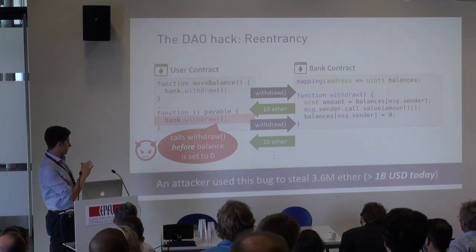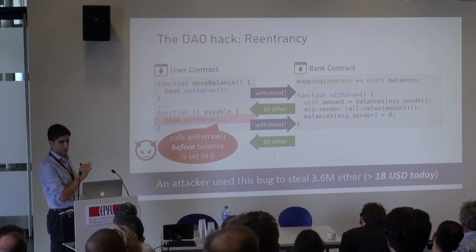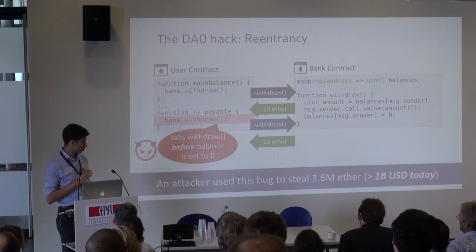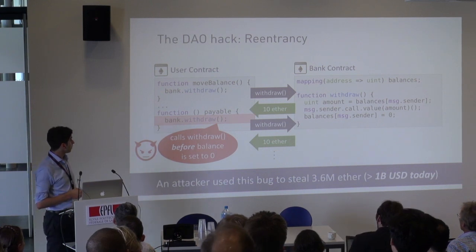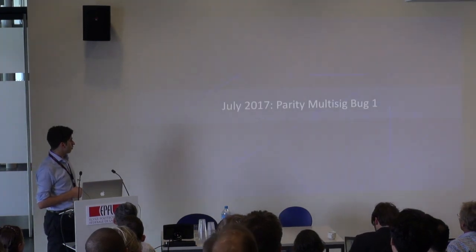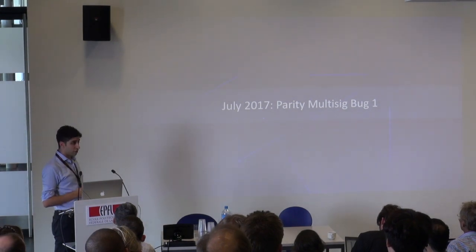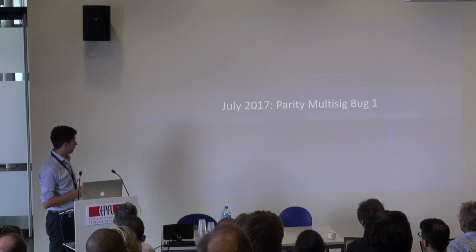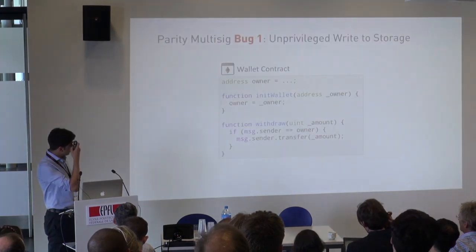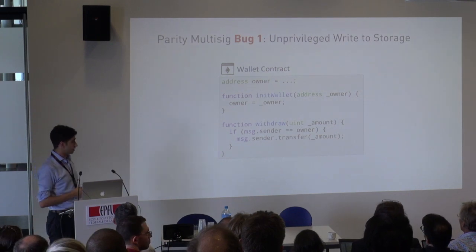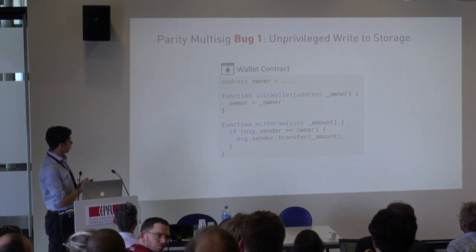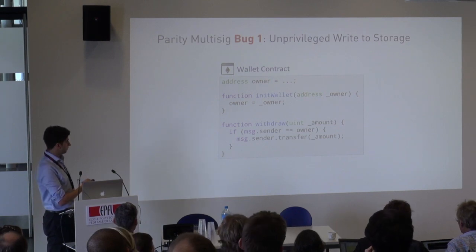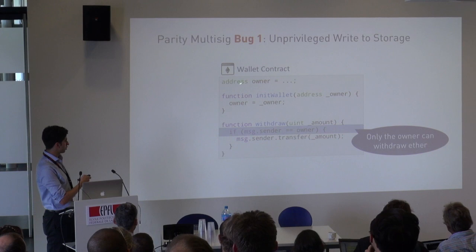That's exactly the kind of bug that happened — the first famous reentrancy bug that allowed an attacker to steal 3.6 million ether, which in today's valuation is a lot of money. Moving forward, the next most significant bug happened in July last year. This snippet shows the core of the problem that was exploited — an implementation of a wallet contract.